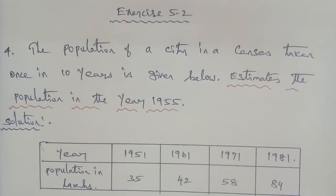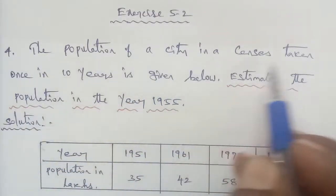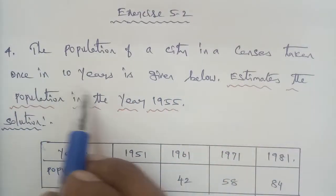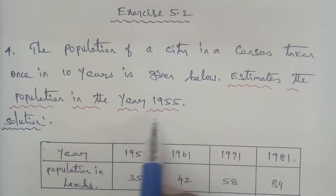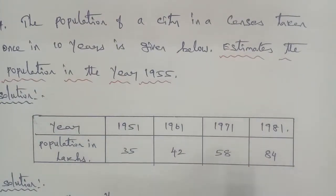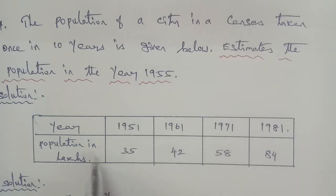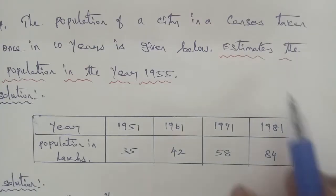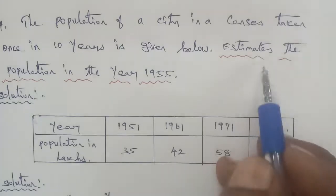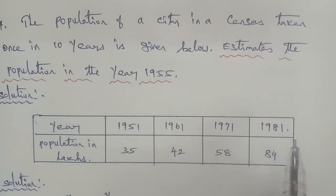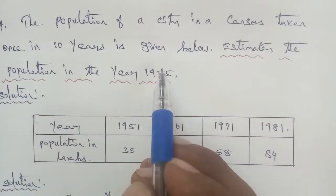Hi students, this is Business Maths Exercise 5.2, Question Number 4. The population of a city in a census taken once in 10 years is given below. Estimate the population in the year 1955. The data table has: 1951 - 35 lakhs, 1961 - 42 lakhs, 1971 - 58 lakhs, and 1981 - 84 lakhs.